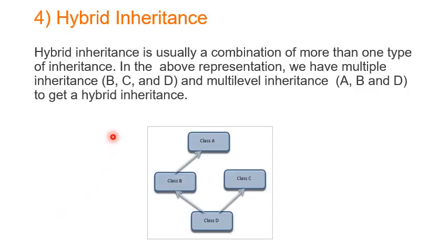Hybrid inheritance is usually a combination of two or more types of inheritance. In our representation, B, C, and D form multiple inheritance, and A, B, and D form multi-level inheritance. That combination is called hybrid inheritance — it is a combination of two types of inheritance.